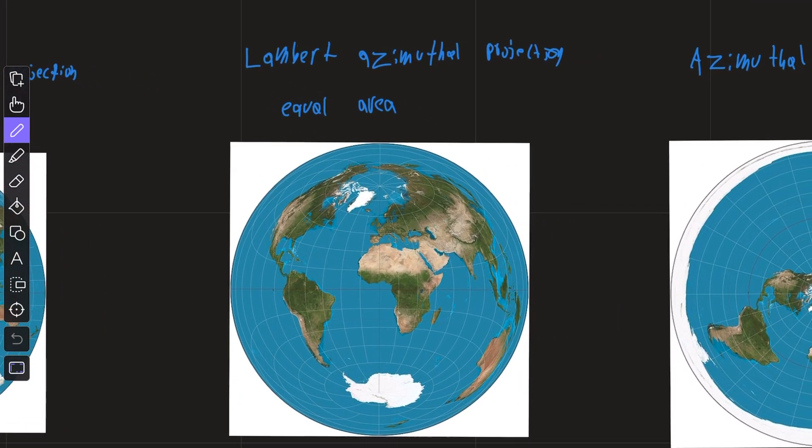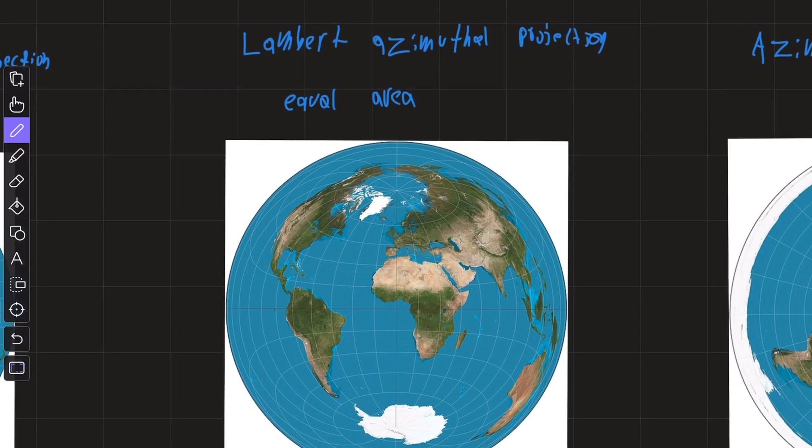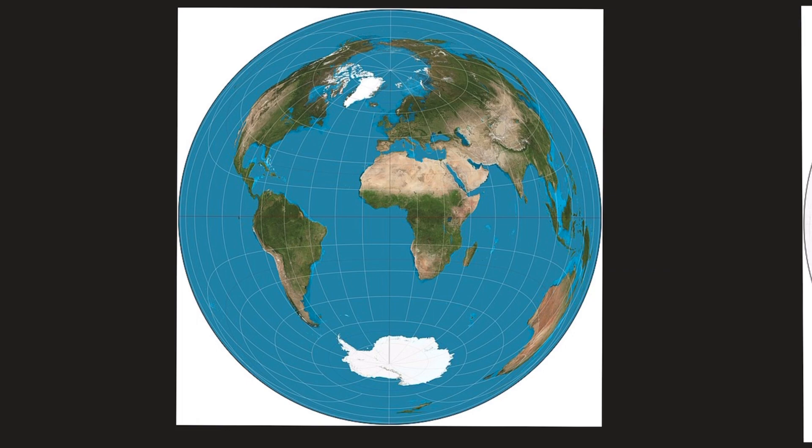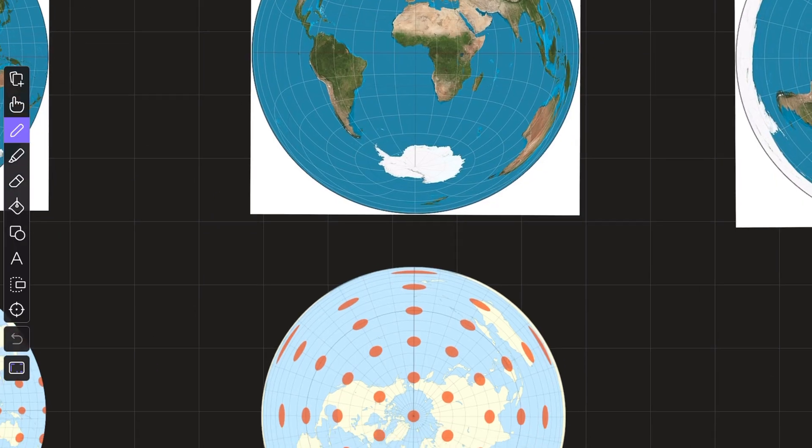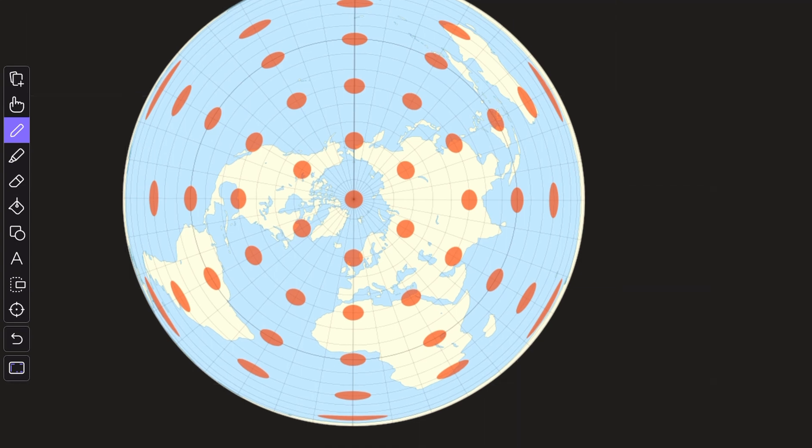Now this right here is another circular map. It is the Lambert Azimuthal projection. And this one caught my eye because it's an equal area projection. So we can clearly see that the lines and the angles are not anywhere close to being preserved, but the actual land area is preserved. So for example, this is the poles and this is the equator, a ton of distortion, but the actual area is maintained.